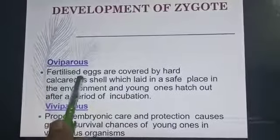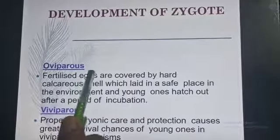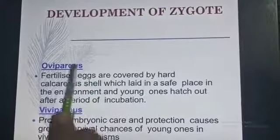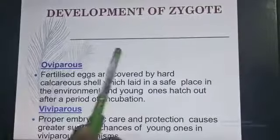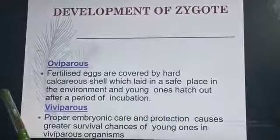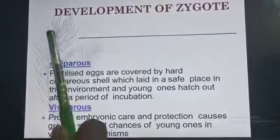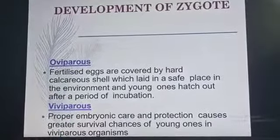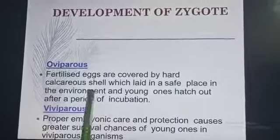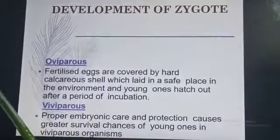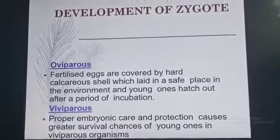In oviparous animals, when the egg becomes fertilized, it is covered by hard calcified shells for the purpose of protection. The eggs are kept in the safest place for hatching. After a period of incubation, the new young ones are produced.